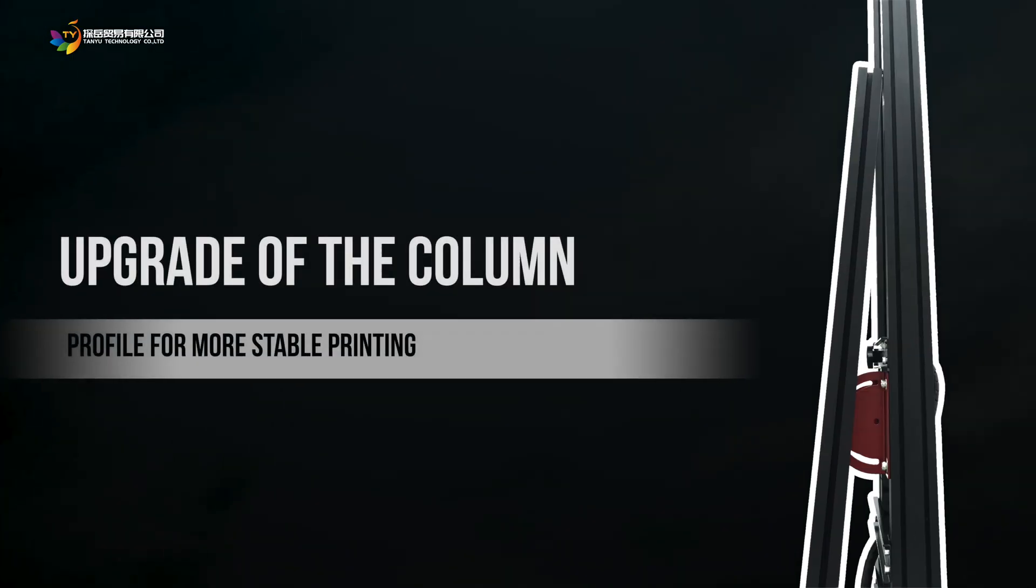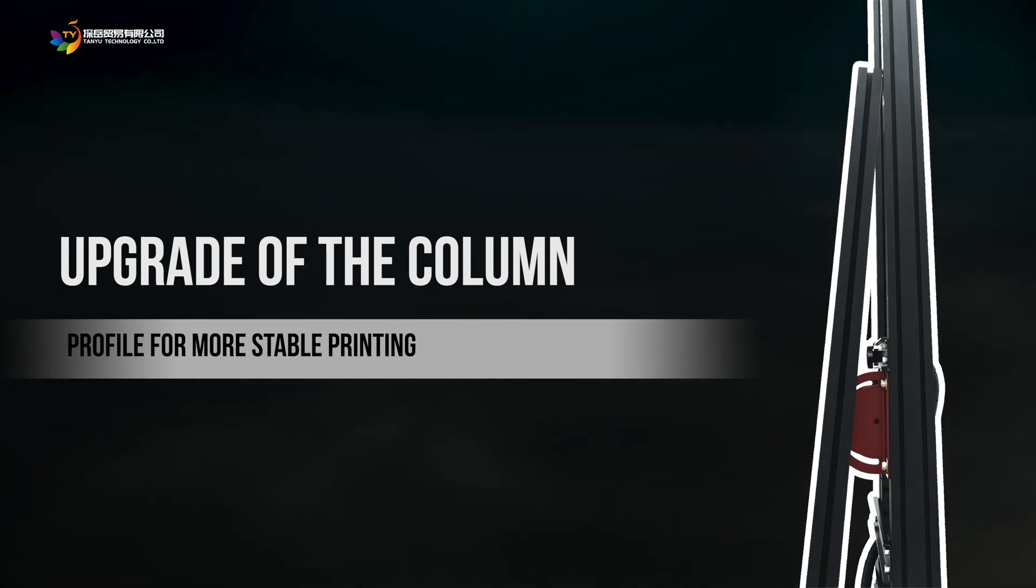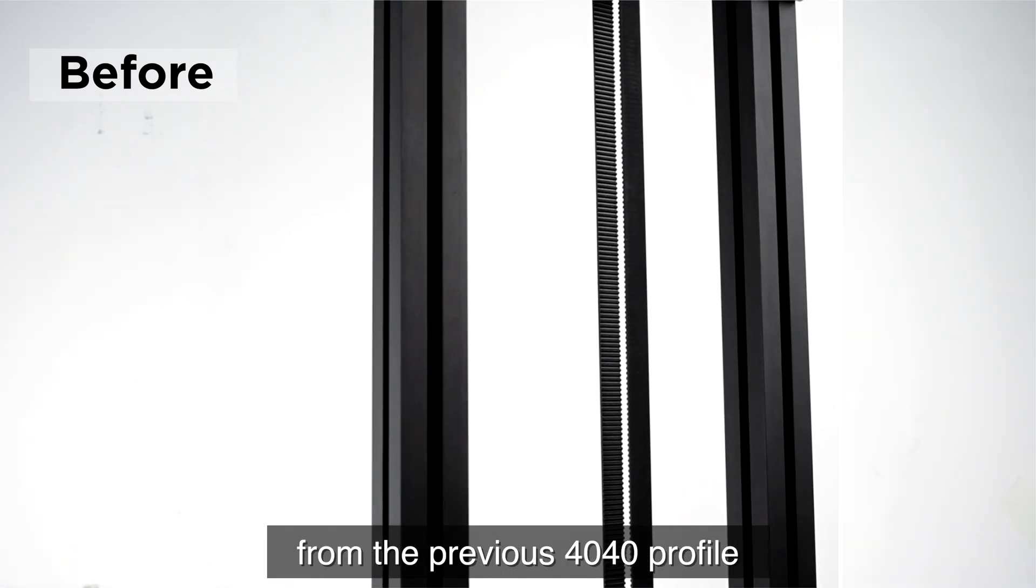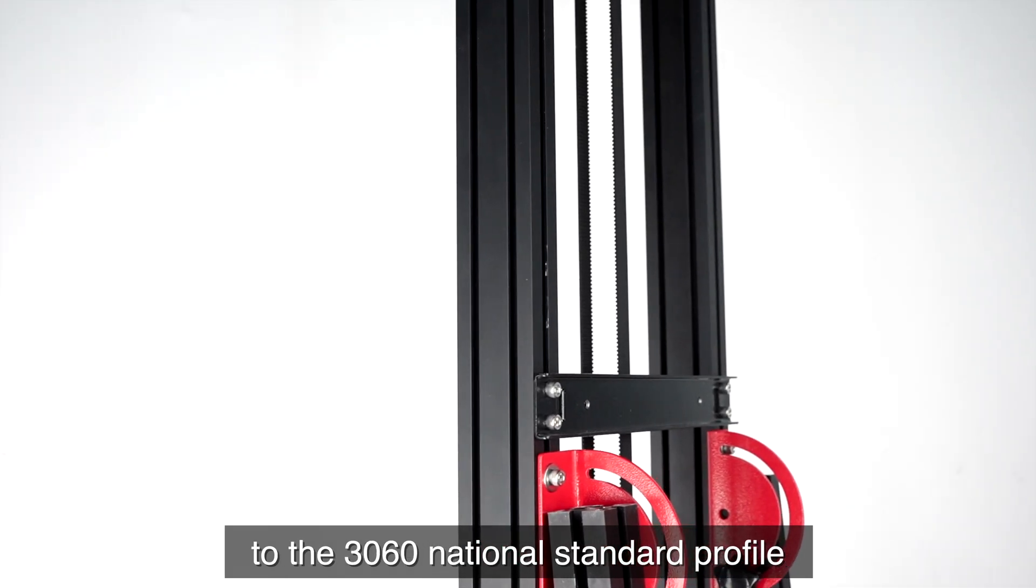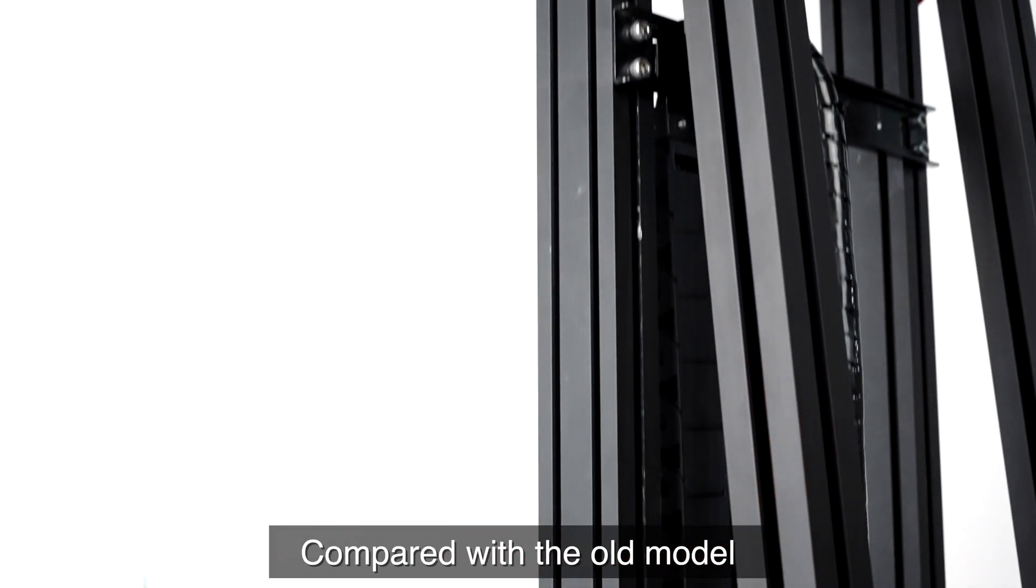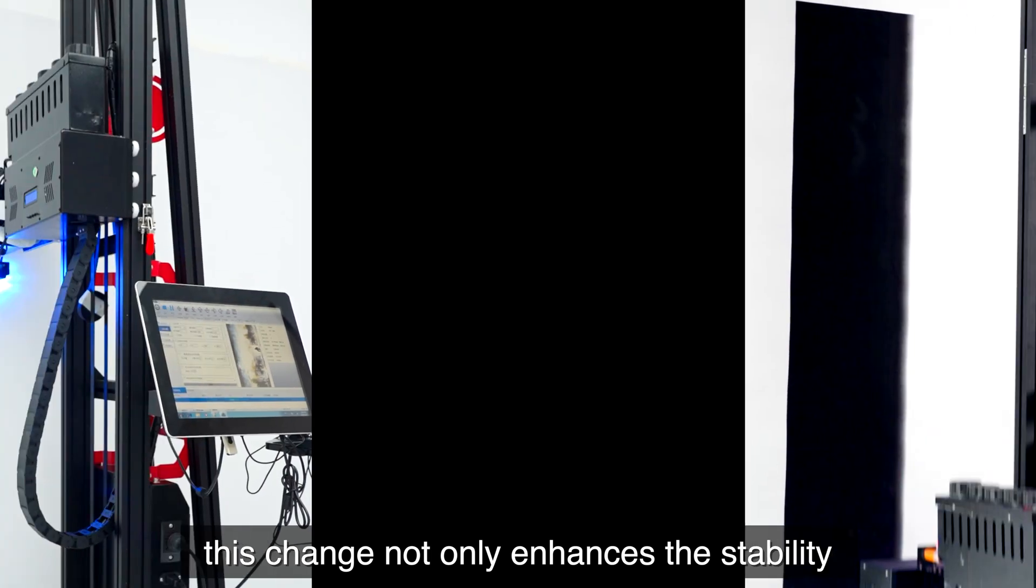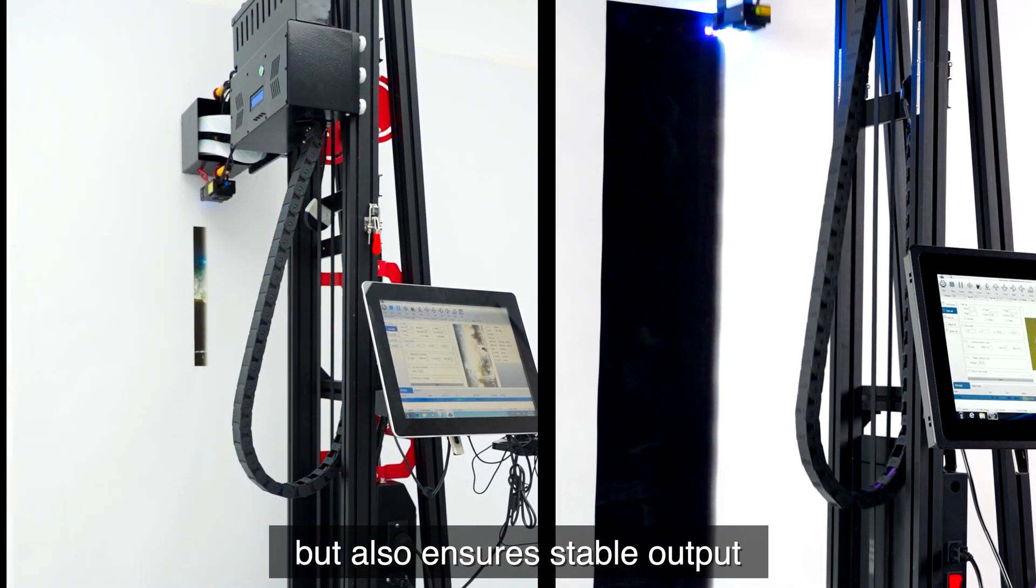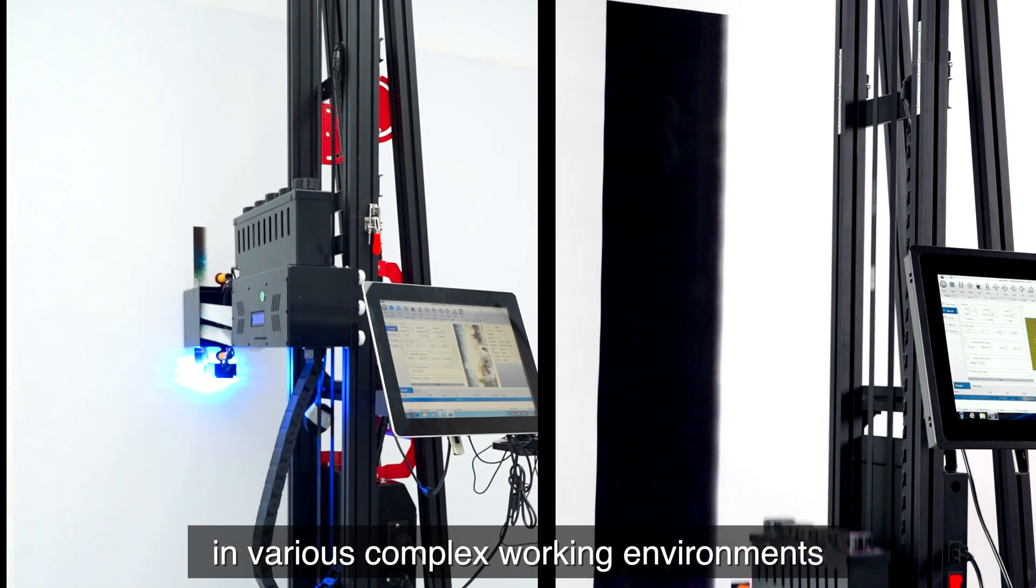Upgrade of the Column Profile for more stable printing. The profile of the column has been changed from the previous 4040 profile to the 3060 national standard profile. Compared with the old model, this change not only enhances the stability of the whole machine, but also ensures stable output in various complex working environments.